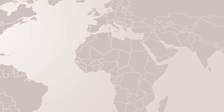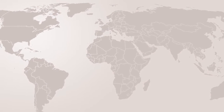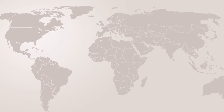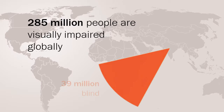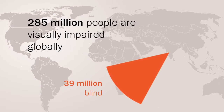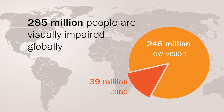The magnitude of visual impairment worldwide is currently estimated to be about 285 million people: 39 million people are blind, and 246 million have low vision.